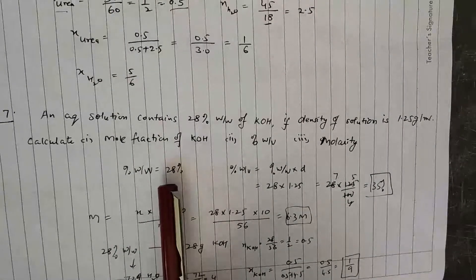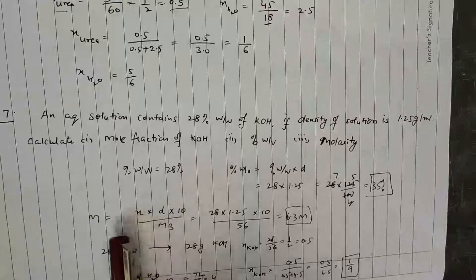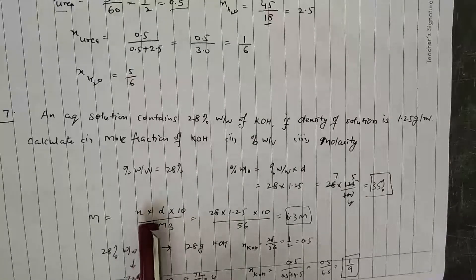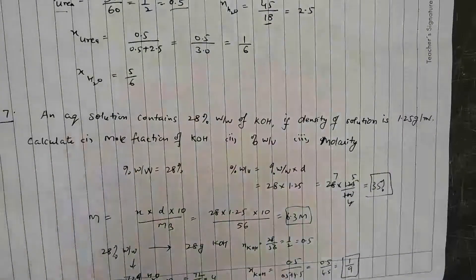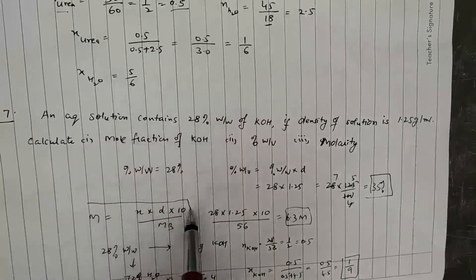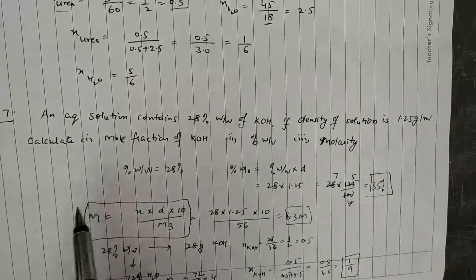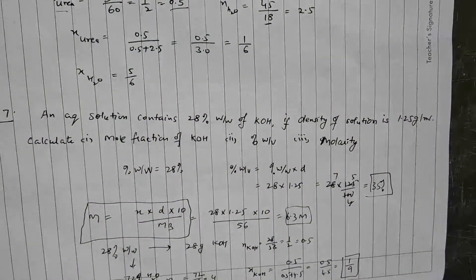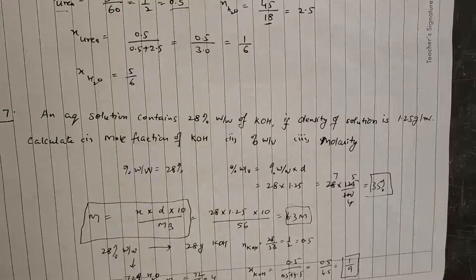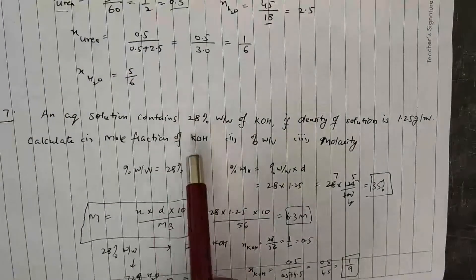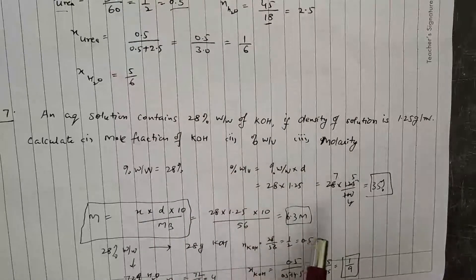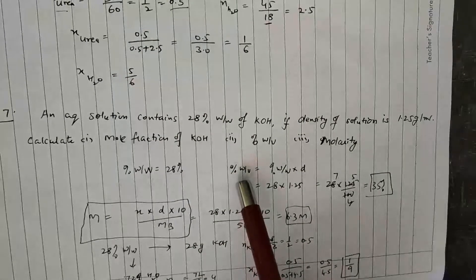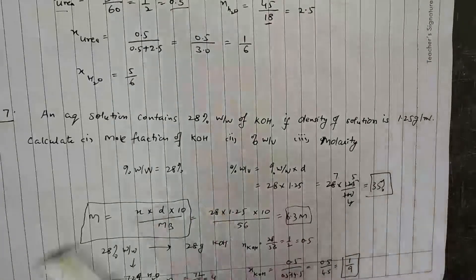We can directly calculate molarity using the formula: Molarity = (x × d × 10) / M_B, where x is percent weight by weight (28), d is density (1.25 g/mL), and M_B is molar mass of solute. Molar mass of KOH is 56. This gives molarity = 6.3 M.